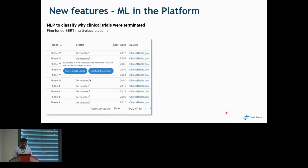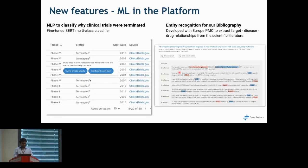One recent example is where we used NLP to classify why clinical trials were terminated. We read over 28,000 clinical trials and fed these into the platform to understand termination reasons. Another example is entity recognition in our bibliography — we revamped our entire literature pipeline and, with the help of Europe PMC, we can now extract target-disease-drug relationships from various scientific literatures.